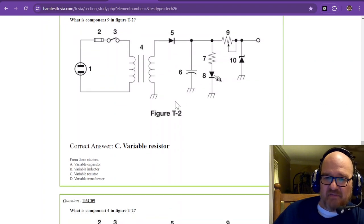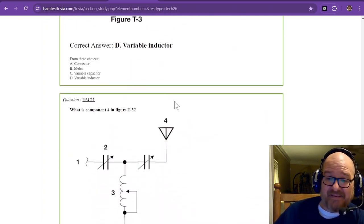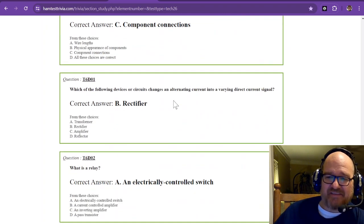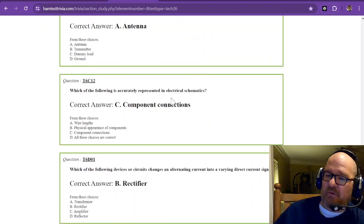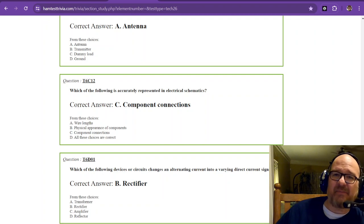So this has been section C, that sub-element C of the technician license exam. And now we're about to get into some more stuff here about electronics after this. So hey, come back for part 22. This is Rob, W1RCP. If you made it this far, like and subscribe. 73. I'll see you next time.